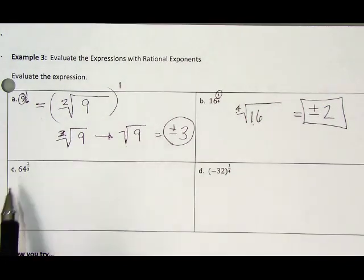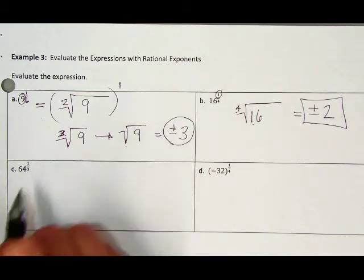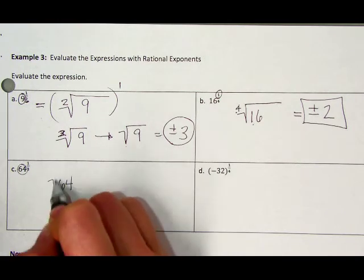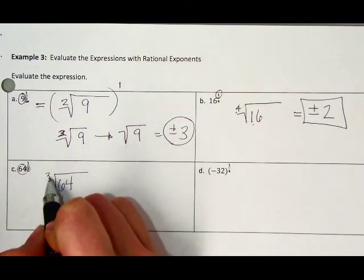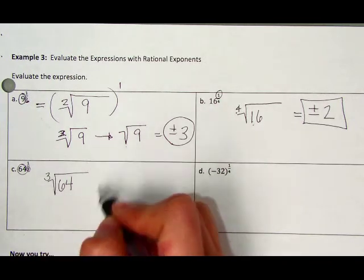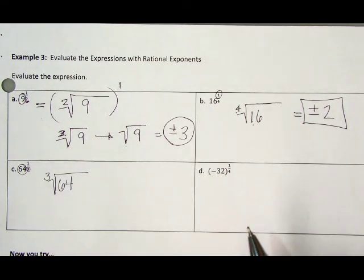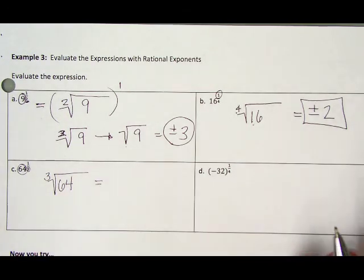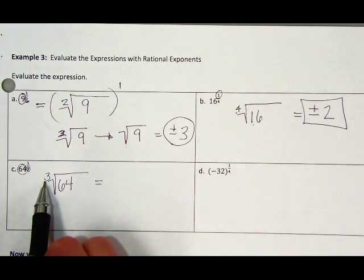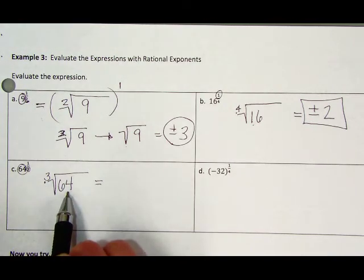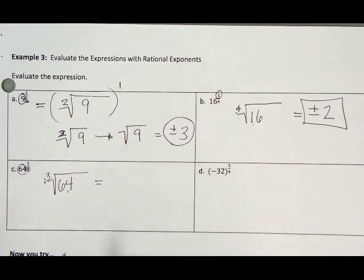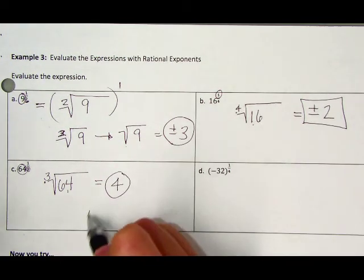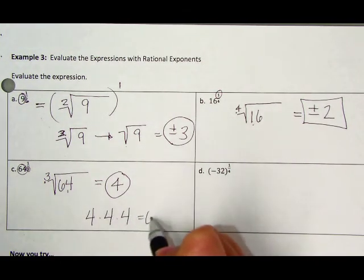In letter C, we have 64 to the 1 third power. So if we rewrite this as a radical, we know 64 is our radicand. So that's the number inside our radical symbol. Our denominator, which is 3, is our index. This whole thing gets raised to the first power, which doesn't change the value inside. So what number multiplied by itself 3 times gives us 64? Again, we have an index that is odd. And we have an inside number that is positive. So we know we only have one solution. That solution is going to be positive. And if you know your numbers well enough, you know that number is going to be 4. Because 4 times 4 times 4 gives us 64.